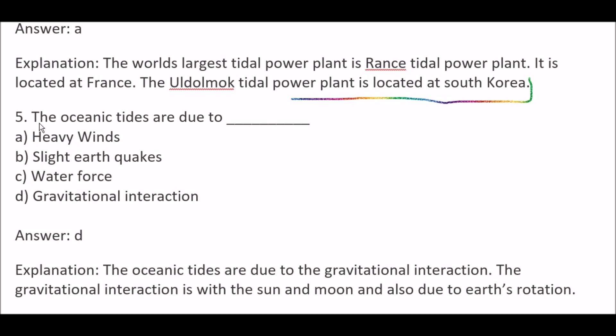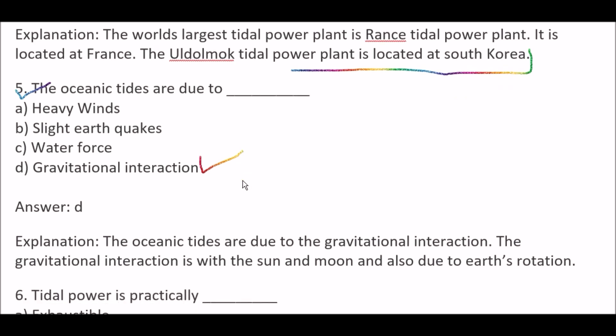Next question: The ocean tides are due to — Option A, heavy winds; Option B, slight earth kicks; Option C, buoyant force; Option D, gravitational interaction. Right answer is Option D, gravitational interaction. The ocean tides are due to gravitational interactions with the sun and moon, and also due to Earth's rotation.